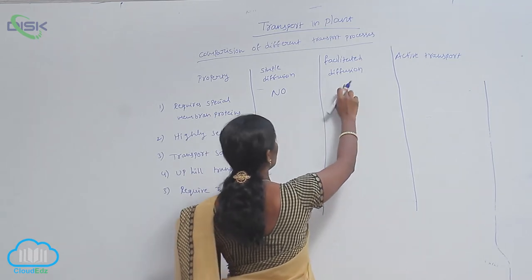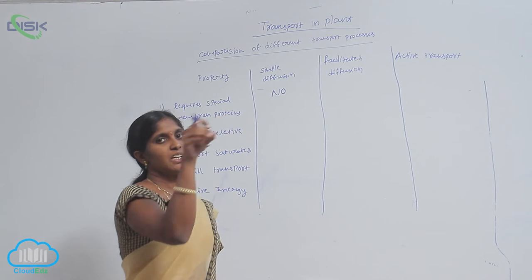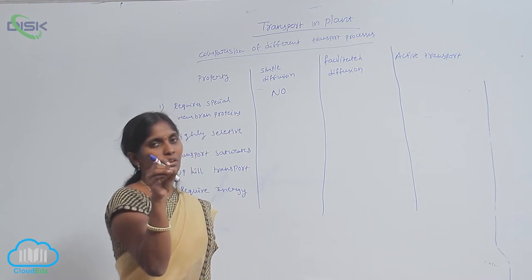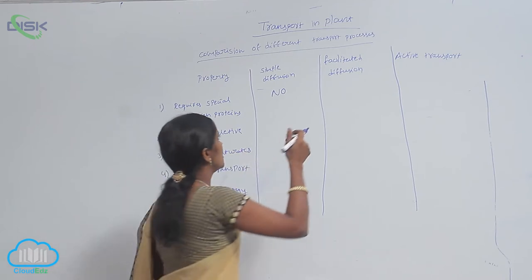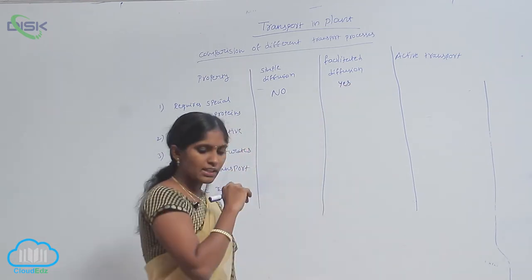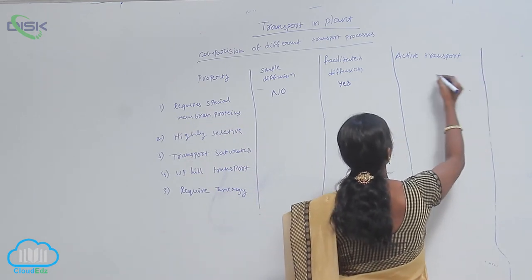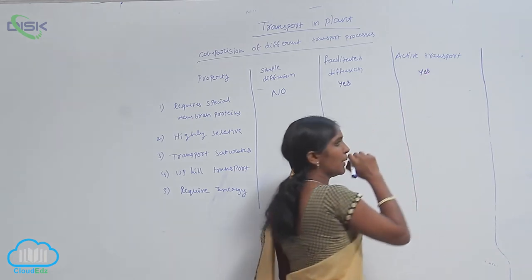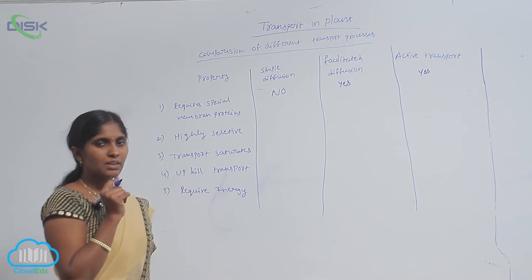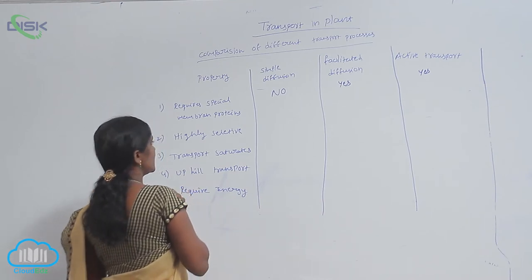For facilitated diffusion, special types of proteins facilitate the diffusion among the concentrations. For active transport, the proteins also work — the proteins act as pumps. So the pumps are proteins, and they work as channels and are highly selective.